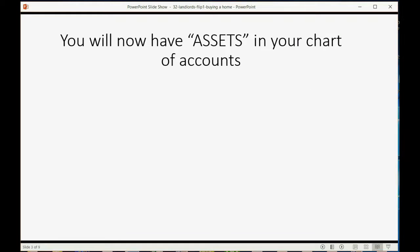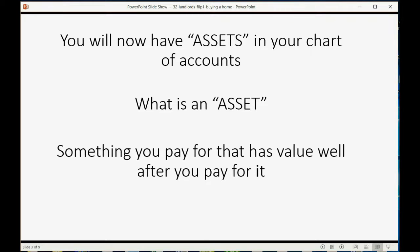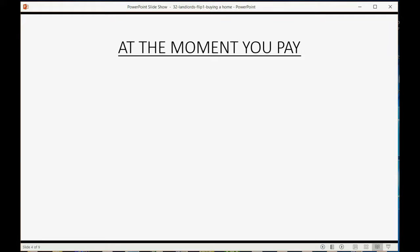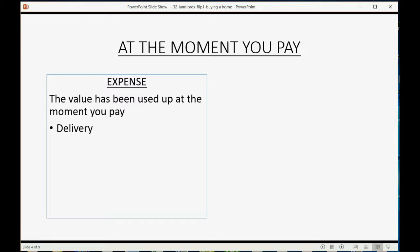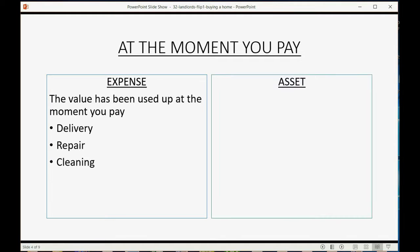For the first time in this course, you will now have assets in your chart of accounts. An asset is something you pay for that has value after you pay for it. At the moment you pay for something, if you already used the value, that's an expense. Expenses are recurring things like delivery, repair, cleaning — things you always have to pay for to maintain and run your business.